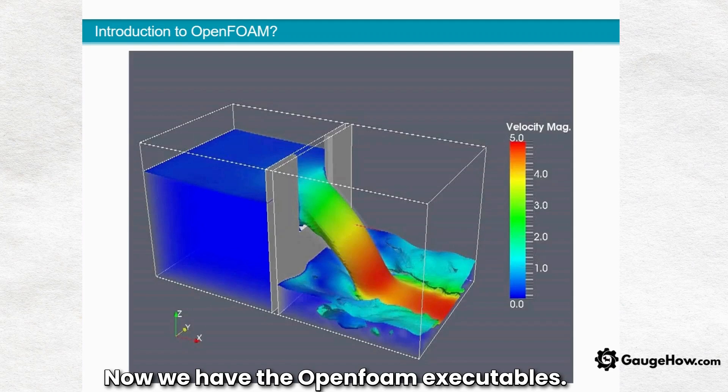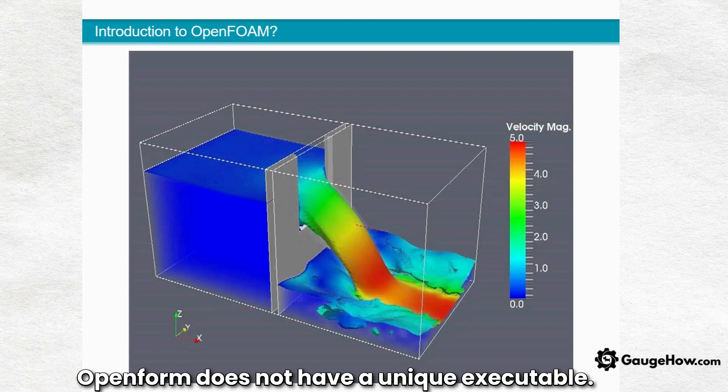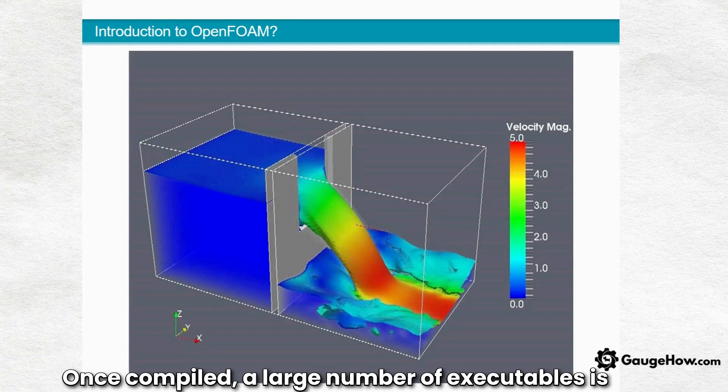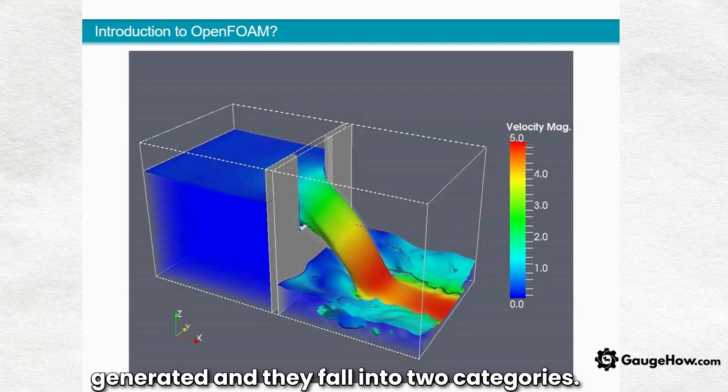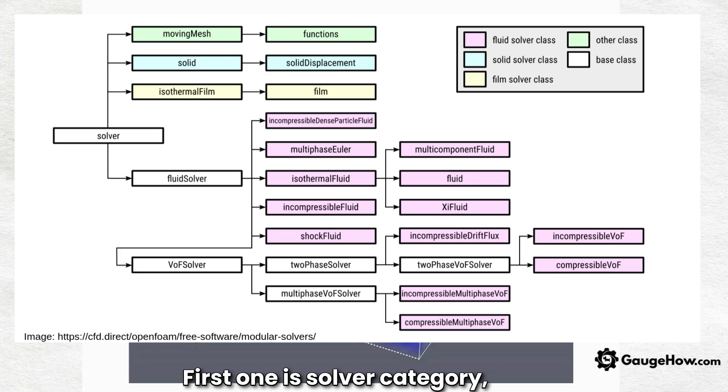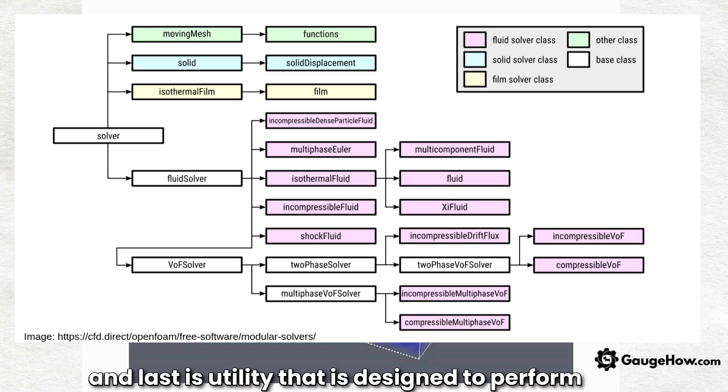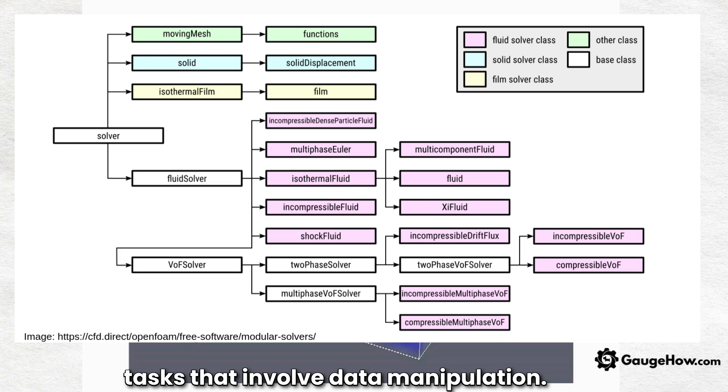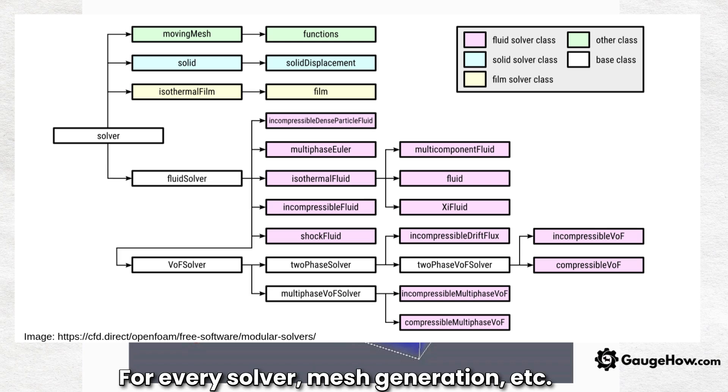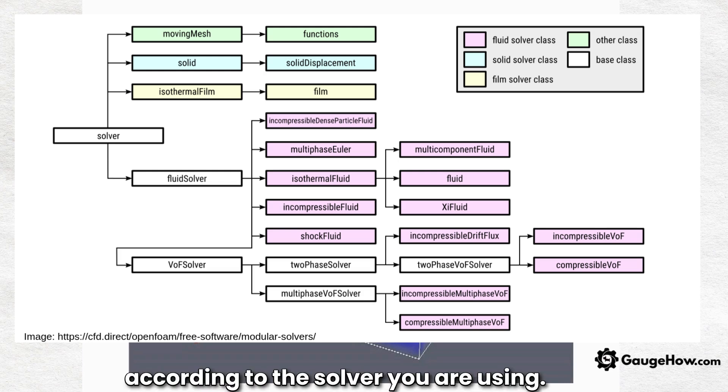Now we have the OpenFOAM executables. Unlike many software, OpenFOAM does not have a unique executable. Once compiled, a large number of executables are generated and they fall into two categories: Solver category and Utility category. Solver is designed to solve a specific continuum mechanics problem and Utility is designed to perform tasks that involve data manipulation. For every solver, mesh generation etc., there is a separate executable.